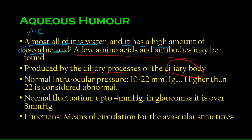The balance between the production and drainage systems constitutes the intraocular pressure. Normal IOP is around 10 to 22 mmHg. There are procedures to measure it which we'll cover in separate lectures. Above 22 is considered abnormal. IOP does fluctuate through the day — up to 4 mmHg is normal, but in glaucoma this fluctuation increases to around 8 mmHg.